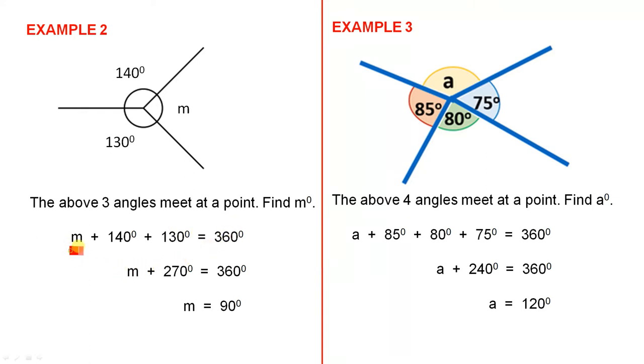So, there is the m. When we add those two together, we get 270. So, what do we need to add to 270 to get 360? m is 90 degrees.